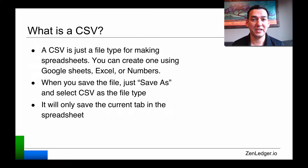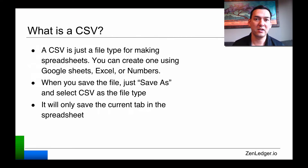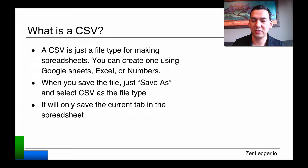So what is a CSV? A CSV is just a simple spreadsheet format. You can use Google Sheets, Mac Numbers, or Microsoft Excel to create these CSVs. They are a single tab spreadsheet, so if you have an Excel spreadsheet that has multiple tabs and you save it as CSV, it's only going to save the current spreadsheet.